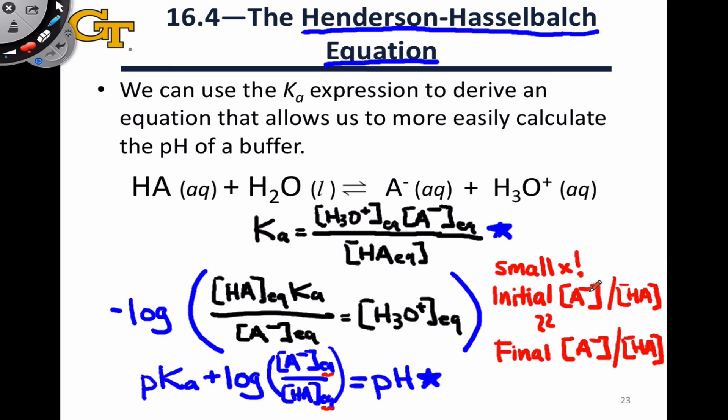Provided that small x approximation works, which it does in the vast majority of buffers, because we want to use large concentrations of the acid and conjugate base to protect the buffer from pH damage, to allow it to do what it's meant to do, which is resist changes in pH. In any event, provided the small x approximation applies, we can replace these equilibrium values with the initial values, recognizing that the two will be approximately equal. So it's an approximation, but it's one that works very well to calculate the pH of a buffer.